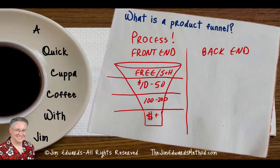Typically a front end funnel starts with some sort of a free offer — whether it's a free article, a free report, a shipping and handling offer on a book, or whatever it is. It starts with something free; even an ad could be the front end. Then typically you move them up to buy something else somewhere in the neighborhood of $10 to $50, then something else in the neighborhood of $100 to $200. These can vary depending on your market, and then it can be anything after that, or you could just make one or two little offers.